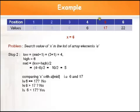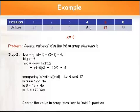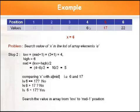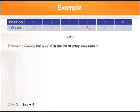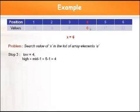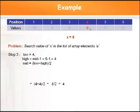Is 6 less than 17? Yes. So the value may be found only in the first half of the remaining array. We search from the lower boundary to mid-1. Lower boundary remains 4, and higher boundary changes to mid-1 = 4. Calculate mid: (4 + 4) / 2 = 4.